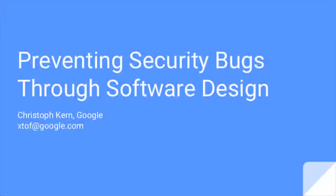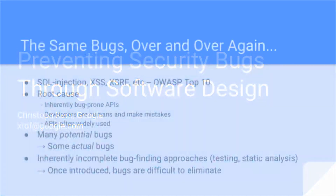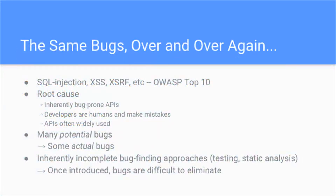The problem we're dealing with is essentially that there are certain security bugs that we just do over and over again. If you look at the OWASP top 10 or the SANS top 25, you'll find certain bugs — SQL injection, cross-site scripting, the various web application bugs, CSRF — that just keep appearing over and over and you don't seem to be getting rid of them using existing approaches like code review, developer education, or static analysis. It doesn't seem to work.